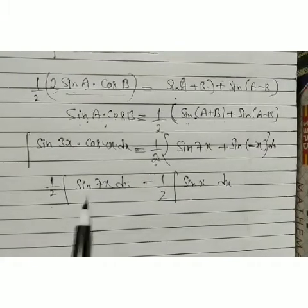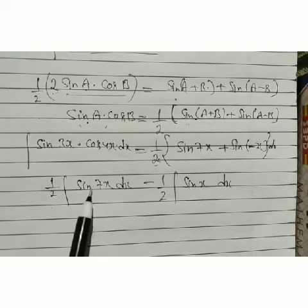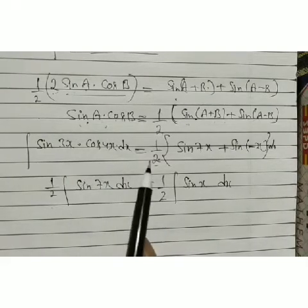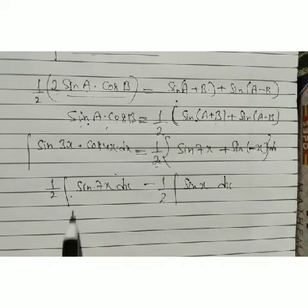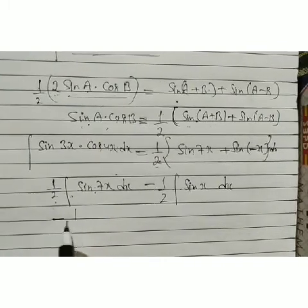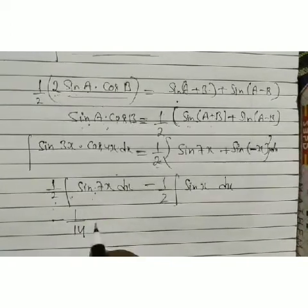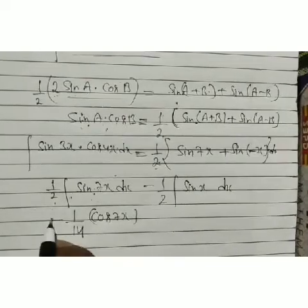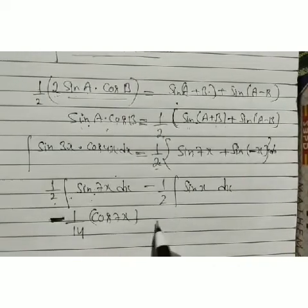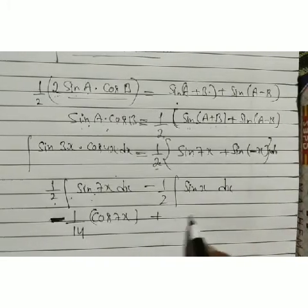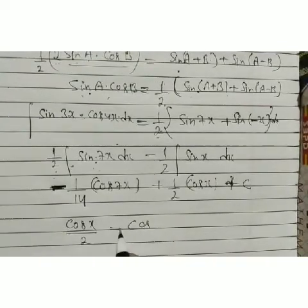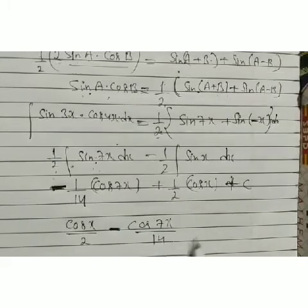For ∫sin ax dx, using d/dx(cos x) = −sin x, so ∫sin x = −cos x. With a coefficient, ∫sin ax dx = −cos ax / a. Therefore: (1/2)∫sin 7x dx = −cos 7x/14. And −(1/2)∫sin x dx = +cos x/2. So the result is cos x/2 − cos 7x/14 + C.